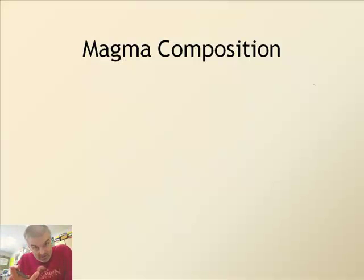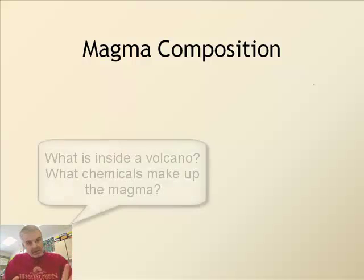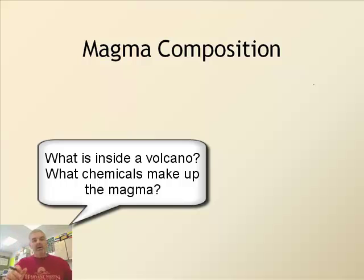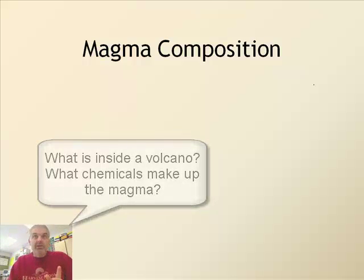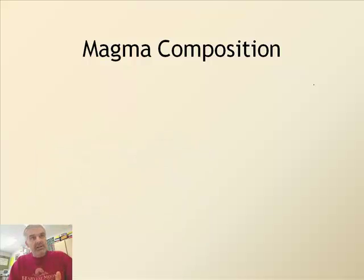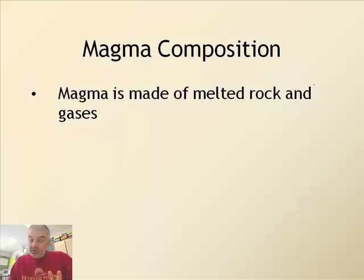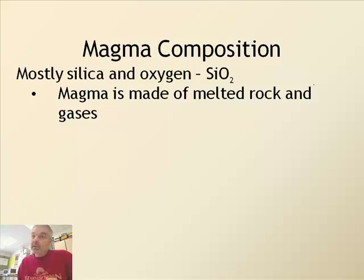Now let's change gears and talk about what's inside of a volcano. There's magma — remember, lava is different. Magma is the liquid rock underneath the ground, and interestingly enough, magma has different constitutions or different chemical makeups.